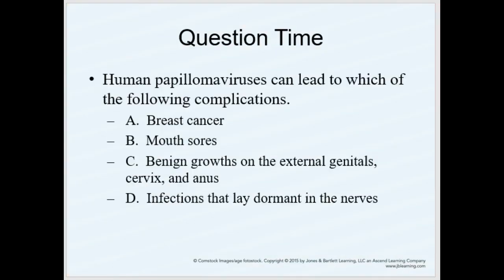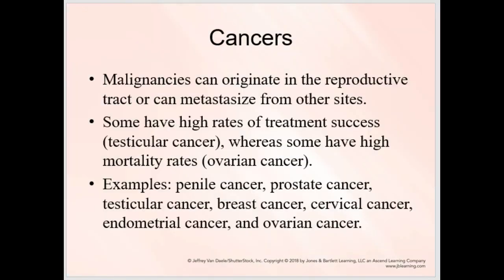Let's give you a quick question: HPV can lead to which type of complications? The options are breast cancer, mouth sores, benign growths on the external genitals, cervix, and anus, or infections that lay dormant on nerves. What do you think the answer is? You can pause it if you need. Otherwise, we're moving on to cancers.